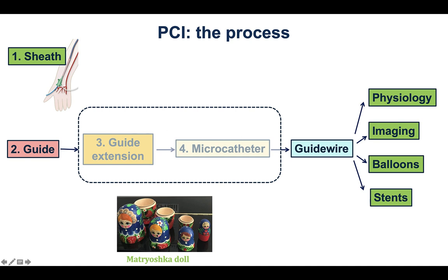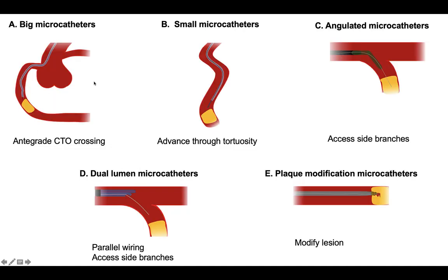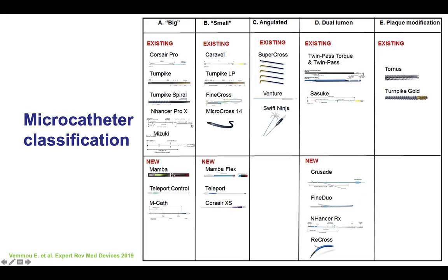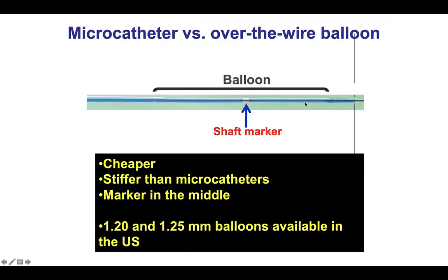This telescoping system is very similar to the Russian Matryoshka doll, where you have multiple smaller dolls inside a bigger one. There are multiple types of microcatheters. They can be briefly classified into big microcatheters, usually used for antegrade crossing of CTOs; small microcatheters to go through tortuosity; angulated microcatheters for wiring through tortuosity and accessing side branches; dual lumen for parallel wiring and accessing side branches; and plaque modification microcatheters. If a microcatheter is not available, an over-the-wire balloon can be used instead.